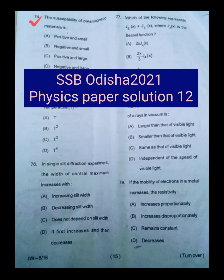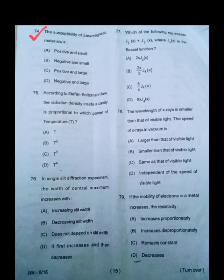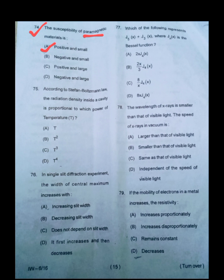In question number 74, the susceptibility of paramagnetic material is - so paramagnetic materials are slightly affected by the magnets, so its susceptibility is positive and small.